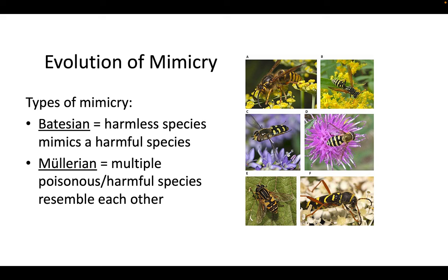Mimicry occurs in many different interactions. There are two main types. The first is Batesian mimicry, where a harmless species mimics a harmful species. The second is Mullerian mimicry, where multiple poisonous, venomous, or harmful species resemble each other. We see Mullerian mimicry when different bees share a black and yellow pattern. When organisms that are themselves harmless mimic that black and yellow bee pattern, that is Batesian mimicry.